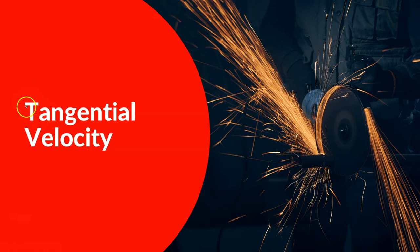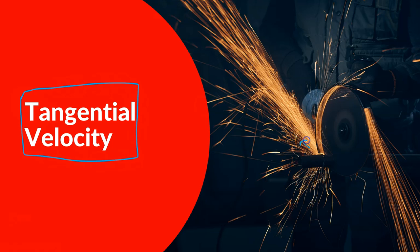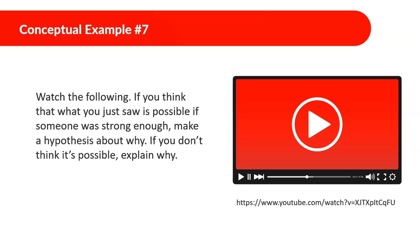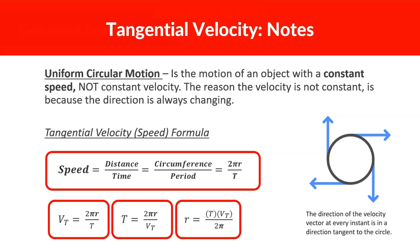Welcome back to uniform circular motion. Today we are going to be talking about tangential velocity. Uniform circular motion is the motion of an object with constant speed, not constant velocity. The reason the velocity is not constant is because the direction is always changing. Even though it's moving with constant speed, since its direction is changing, the velocity is not constant. This is a spoiler, but since the velocity is not constant, it is accelerating — we'll talk more about that later.